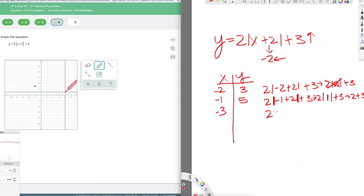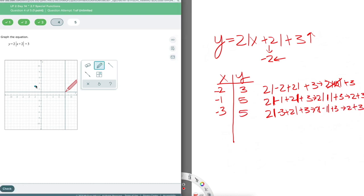So 2 times the absolute value of negative 3 plus 2, plus 3. So we end up with 2, and the absolute value instead of 1, it's negative 1, but that doesn't change anything. The absolute value of negative 1 is 1. 1 times 2 is 2, plus 3, and we still get 5. So perfect. That mirroring happened. That's exactly what we want to see.